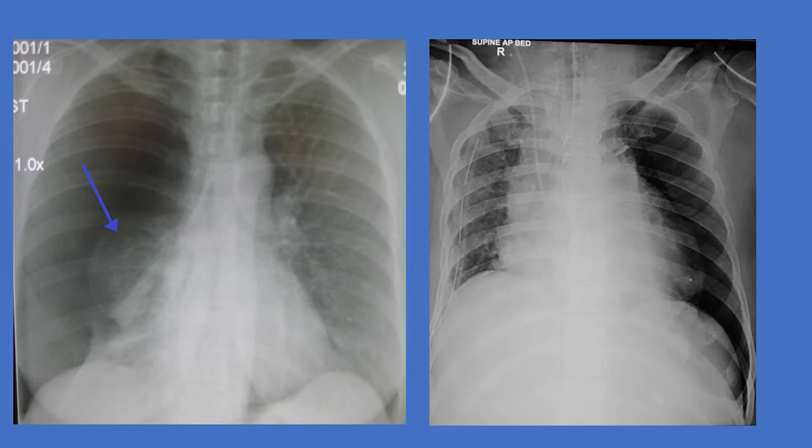Here are some pictures of a chest x-ray with a pneumothorax. On the left side of the screen, you can see a clear demarcation with loss of lung markings. On the right side of the screen, you can see a deep sulcus sign on the patient's left. These are considered overt pneumothoraces.